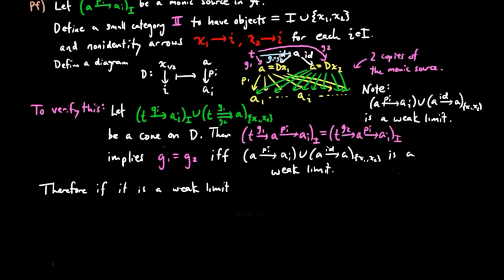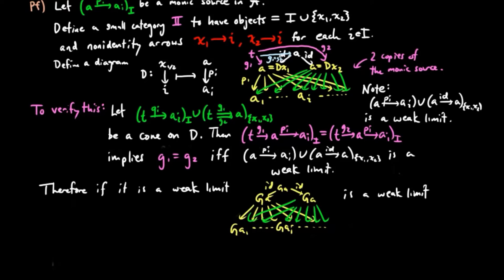Therefore, if it is a weak limit for D, which it is since we're going to assume that PI is a monic source, then G preserves it and we have the following diagram is a weak limit in the category B.